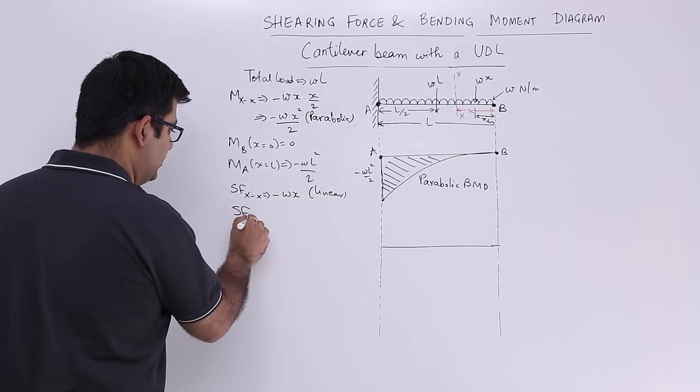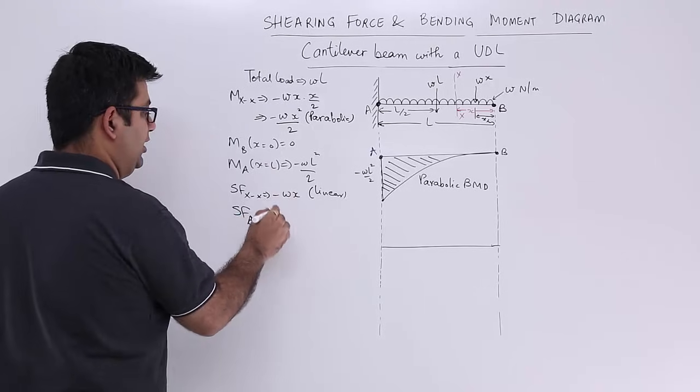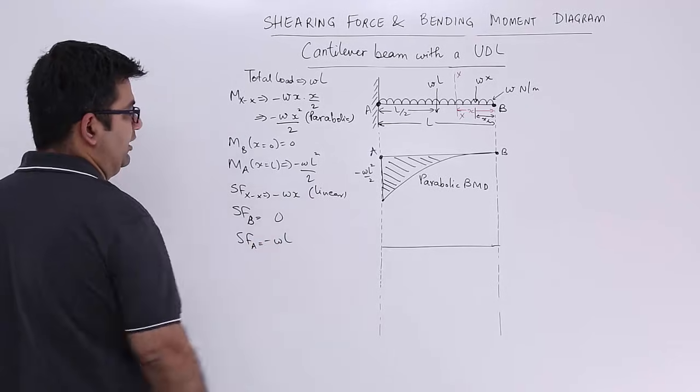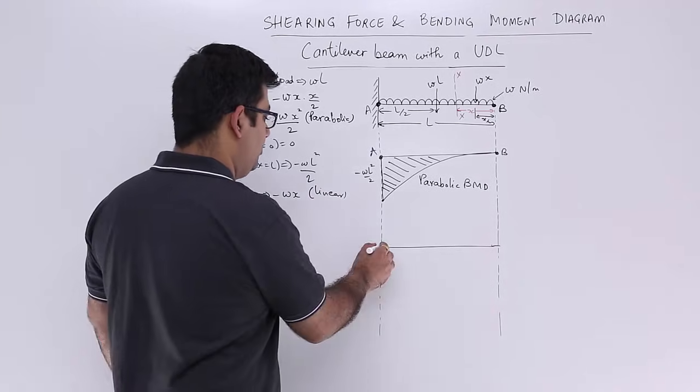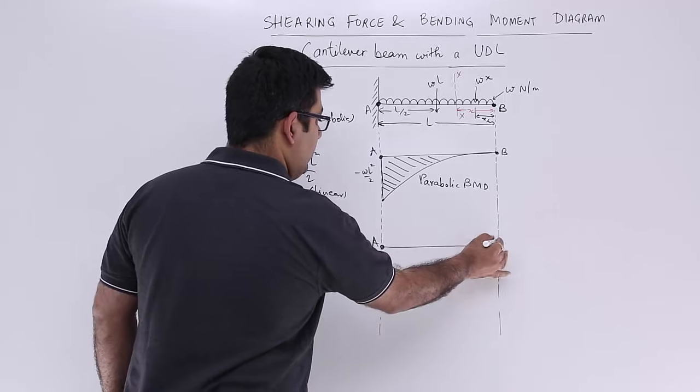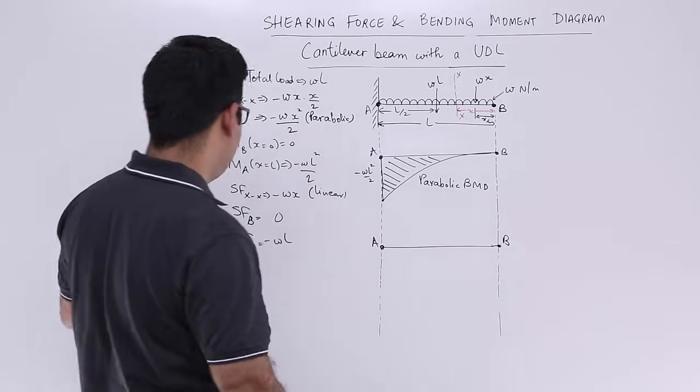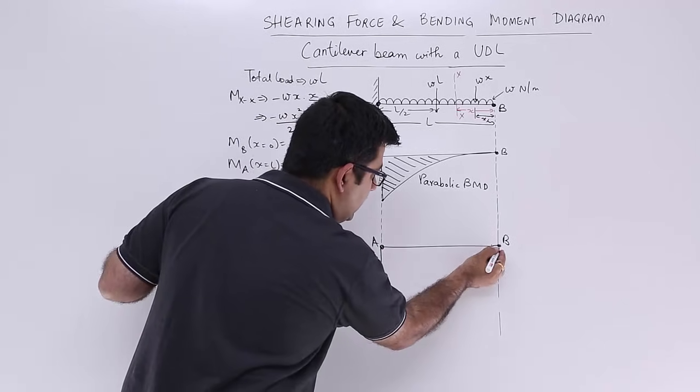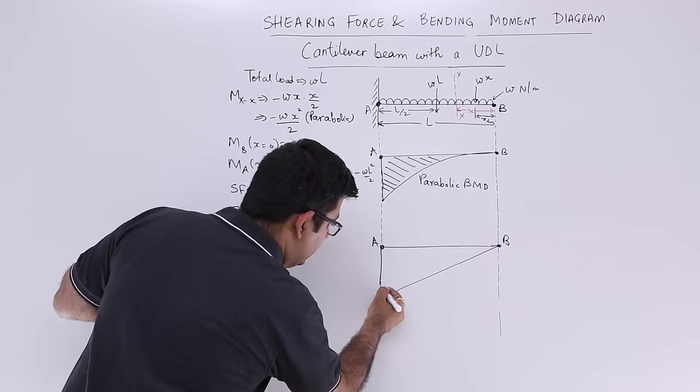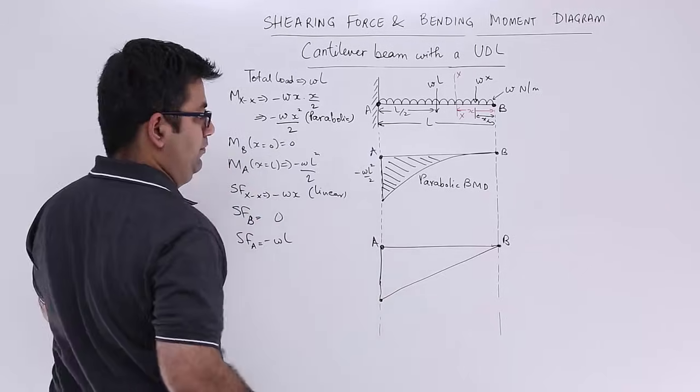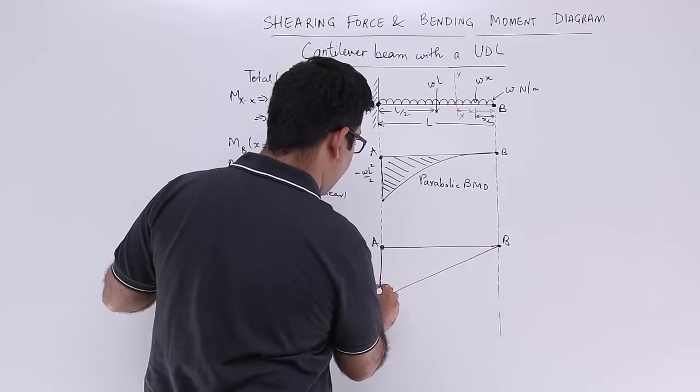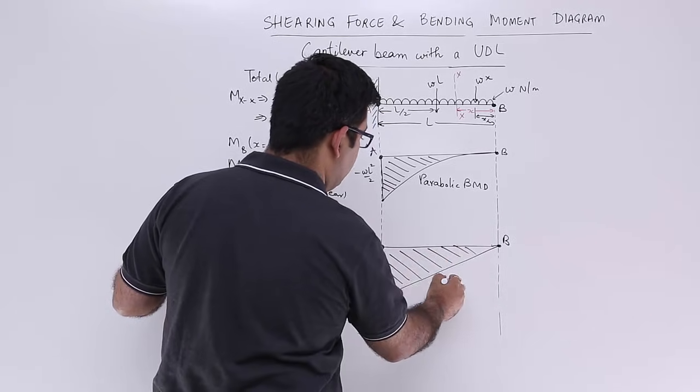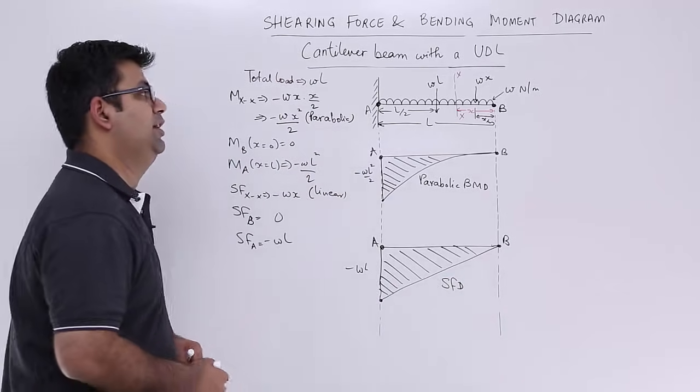What would be the shearing force at point B? It will be 0. And the shearing force at A will be minus WL. So if this is point A and this is point B, at B it is 0 and at A it is WL. So this is how it will go, a straight line. So this is minus WL, and this is the shearing force diagram.